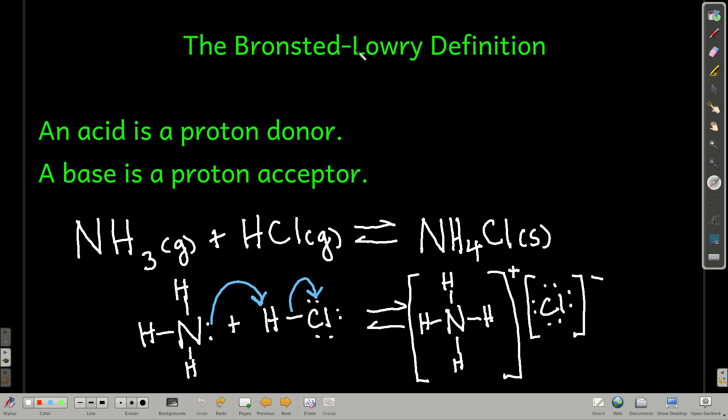The Bronsted-Lowry definition. According to Bronsted-Lowry, an acid is a proton donor, something that donates protons, and a base accepts protons, it's a proton acceptor. For example, in the reaction between gaseous ammonia and gaseous hydrogen chloride to make solid ammonium chloride, what's happening here is the nitrogen atom with its two lone pairs of electrons is accepting a proton from hydrogen chloride.